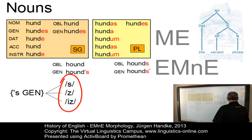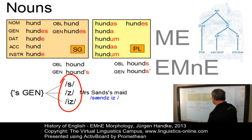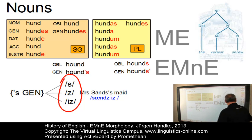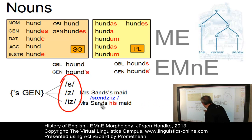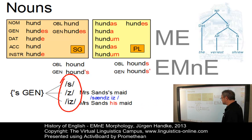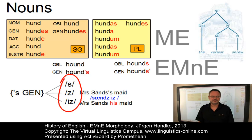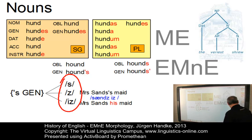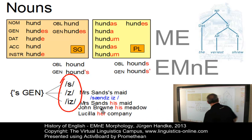So, something like Mrs. Sans's maid, where the genitive s, which was phonologically represented as is, was wrongly interpreted as Mrs. Sans his maid. And this misinterpretation spread to the other possessive adjectives by analogy, so we could find examples like John Brown his meadow and Lucilla her company.